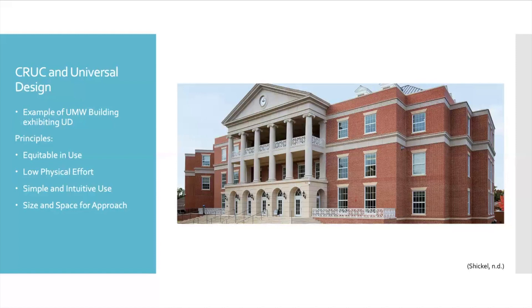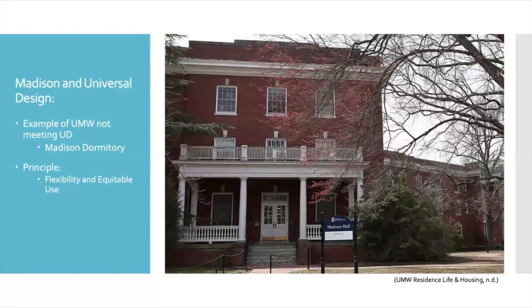Historic buildings sometimes struggle to meet the principles of Universal Design. An example at UMW is Madison Hall, one of the older buildings. Madison does not have elevators, which goes against the Flexibility and Equitable Use principles. The entrances require stairs to reach the door, also violating those principles. Like most campus buildings, Madison has door alarms that go off when the door is held open too long, which can be stressful — especially for people moving at their own pace or carrying many items. Madison also has no or very few automatic door-opening buttons, going against Equitable Use and Low Physical Effort. Students with mobility aids have to contort their bodies to open a heavy door while getting their aids through.